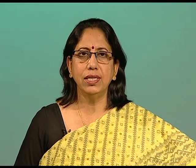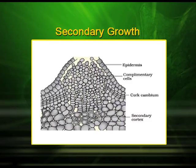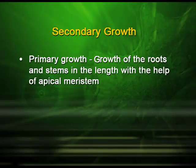In this episode I will be stressing on the secondary growth of the plant, which is a characteristic of the angiospermic plants, mainly of the dicot stem and dicot root. The growth of the roots and stems in length with the help of apical meristem is called the primary growth.